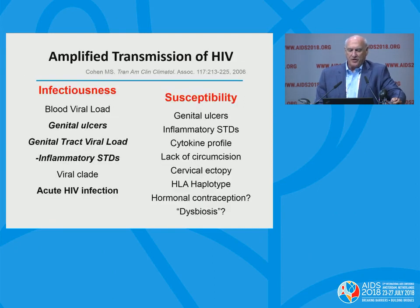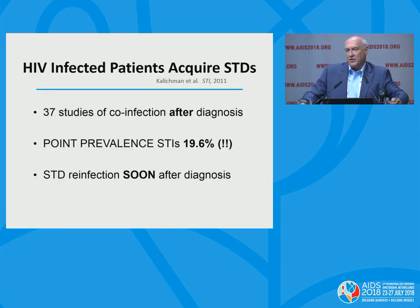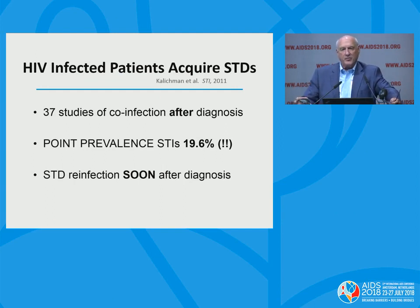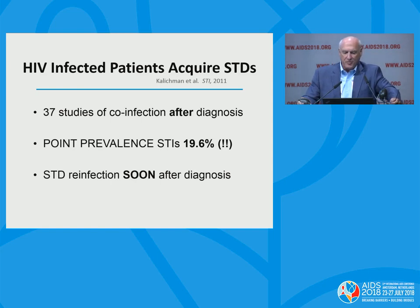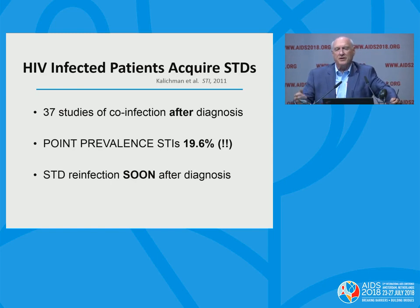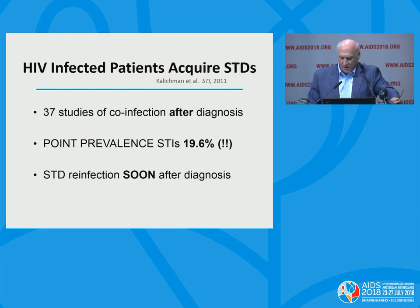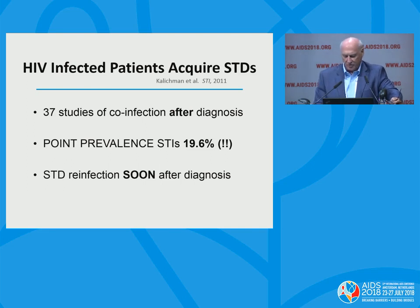Moving to infectiousness: the person who's infected and untreated has a swarm of virus at the mucosal surfaces available for the next person. That swarm can be in the rectum, in the semen, or in female genital secretions. At the beginning of treatment-as-prevention ideas, we anticipated that when we told people they were HIV-infected, behaviors would change so dramatically they wouldn't get STDs. A study by Kalichman and many similar studies show that knowing you have HIV doesn't mean you won't get another STD.